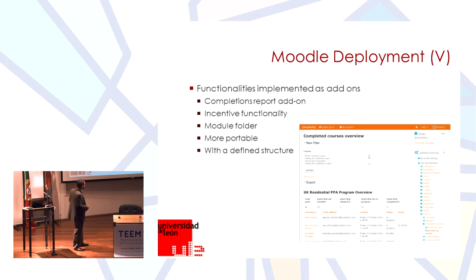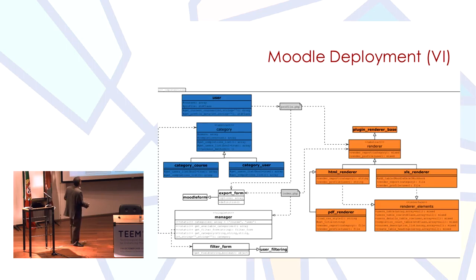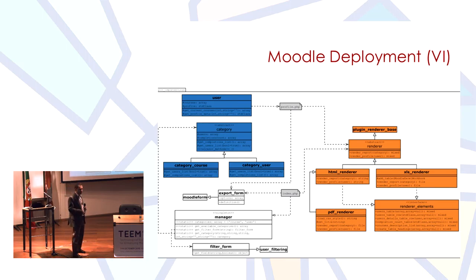What we developed in this way includes two different Moodle completion reports and a system to manage incentives. To build this, we followed a common Moodle structure using renderers and trying to follow a Model-View-Controller pattern — with the renderer, the model including user and course category objects, and the controller handling the activities.